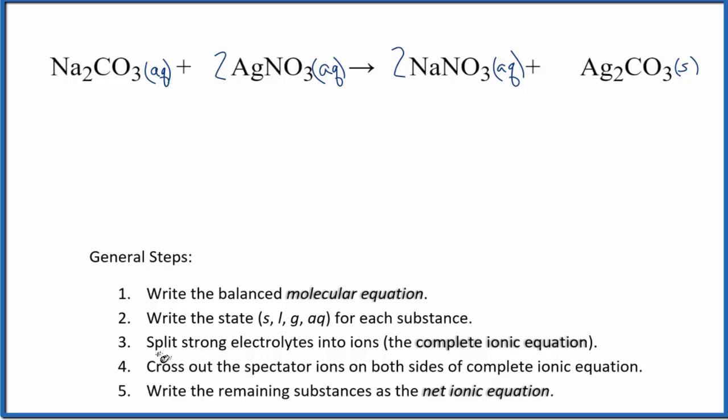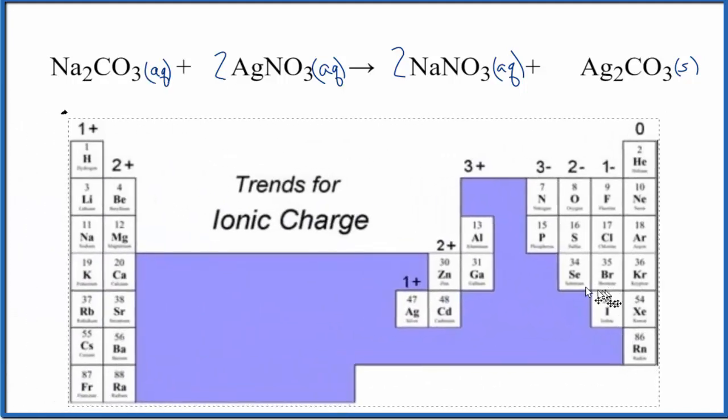Next, we'll split the strong electrolytes into their ions. So things with aqueous here, those are strong electrolytes. In order to split them apart into their ions, we have to look the ionic charge up. So let's do that. Here's a version of the periodic table with the charges written above the groups. So as we look down, we see sodium. That has a one plus. All these in group one are one plus.